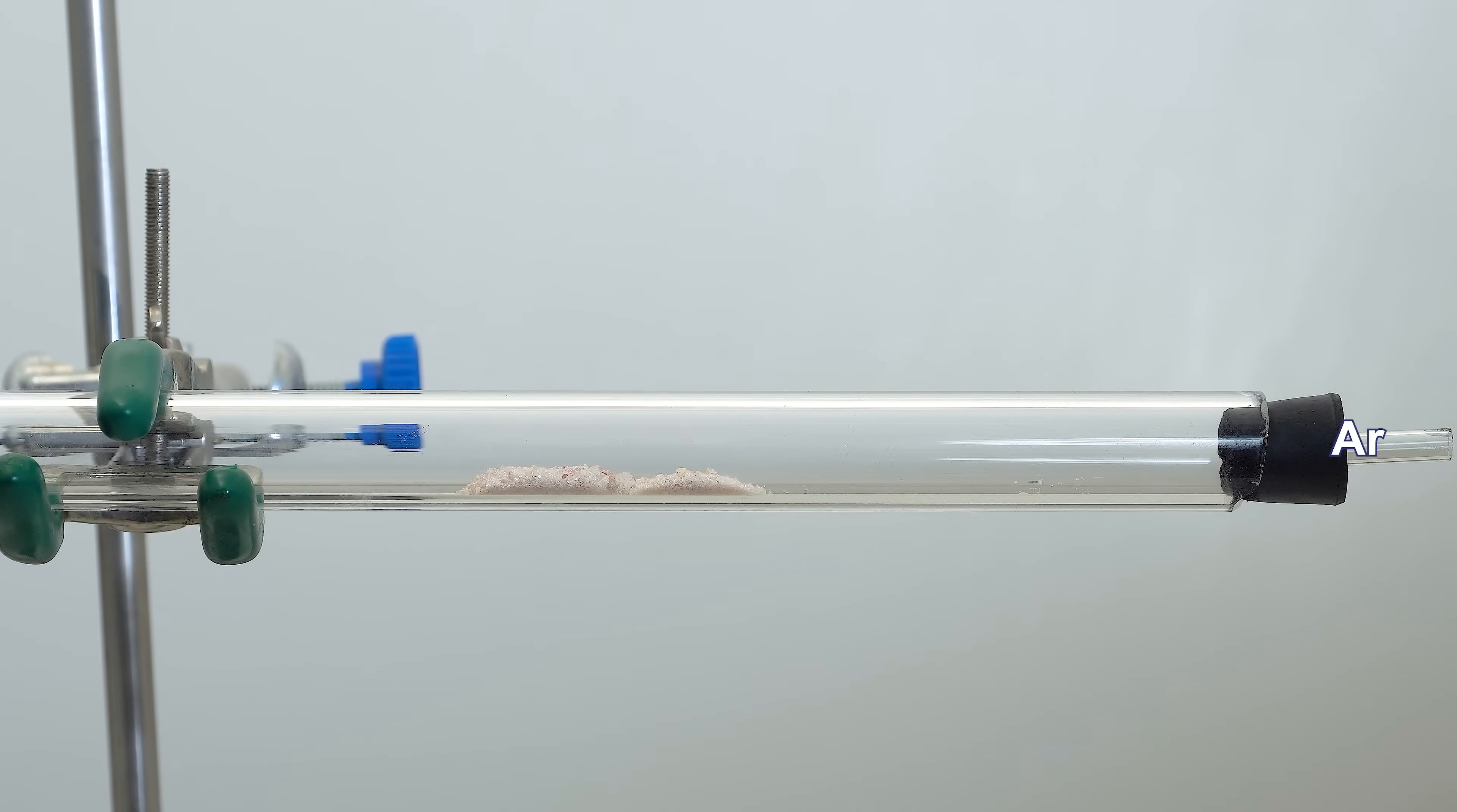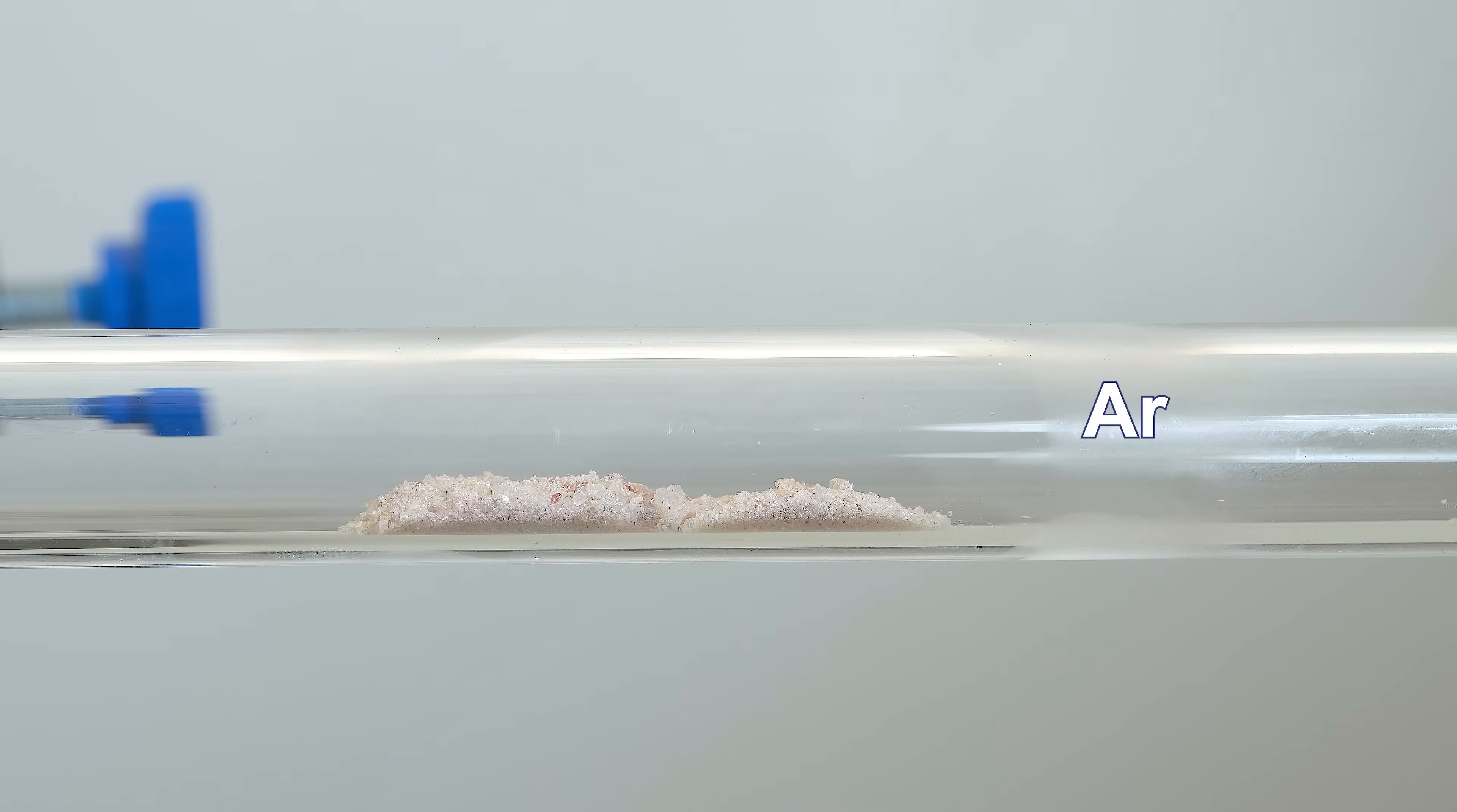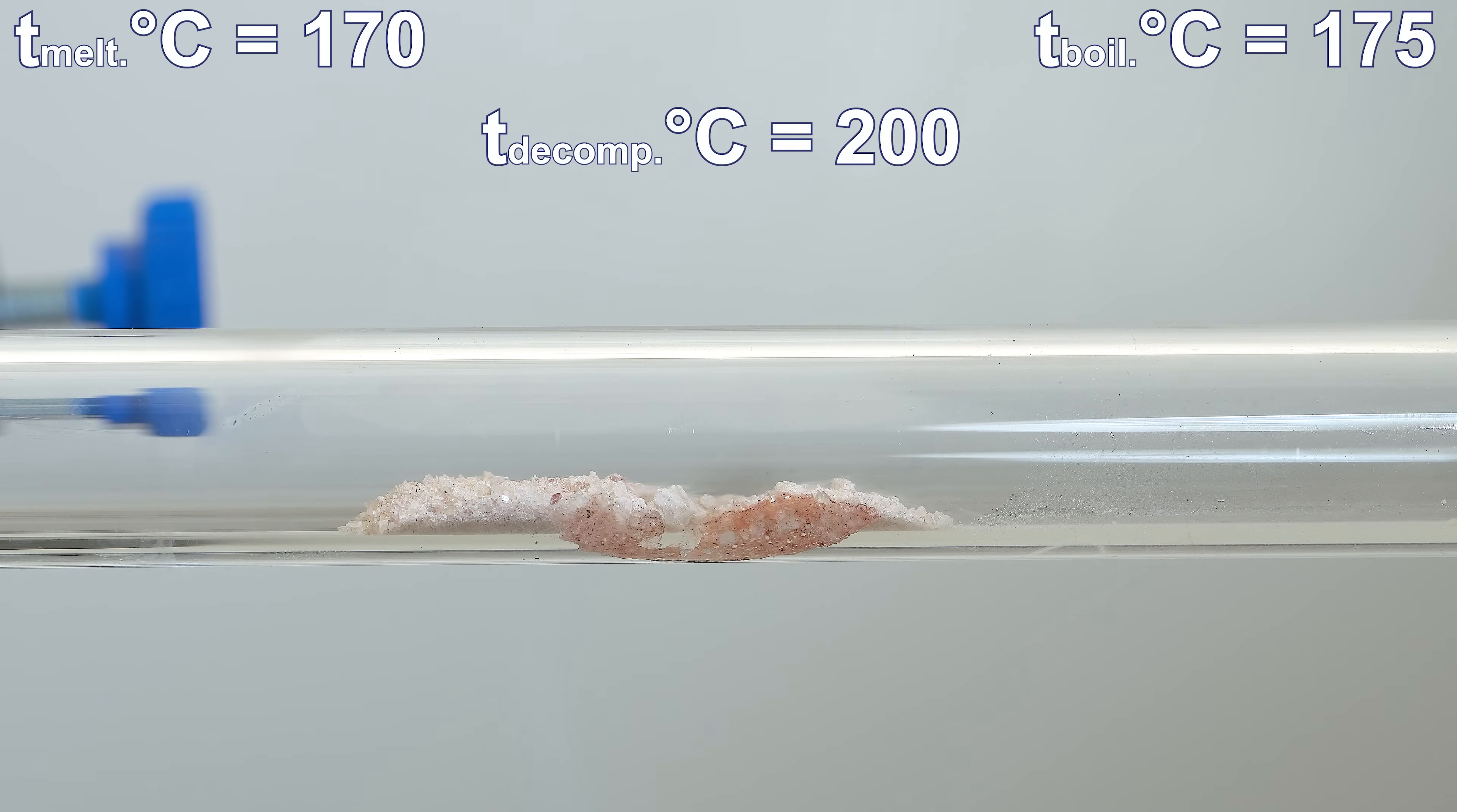Now I'll start passing an argon flow through the tube while applying heat to the tungsten hexacarbonyl using a gas burner flame. The melting, boiling and decomposition temperatures of tungsten hexacarbonyl are very close, allowing us to witness all three processes concurrently.